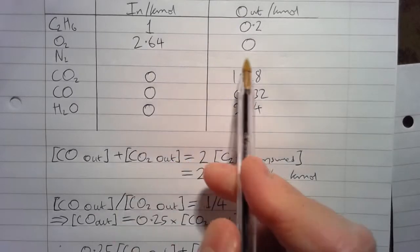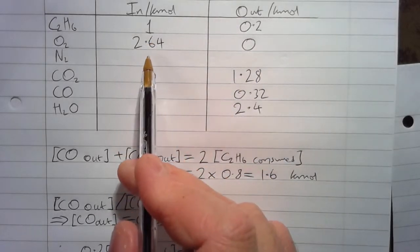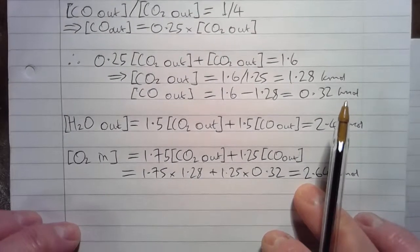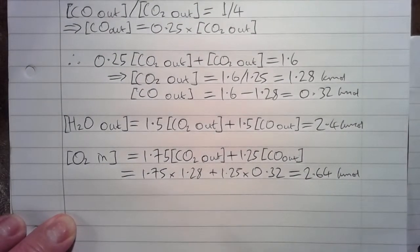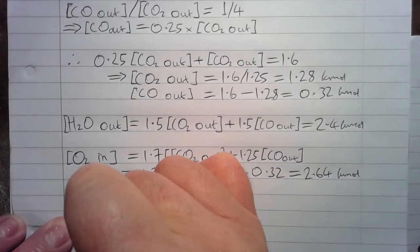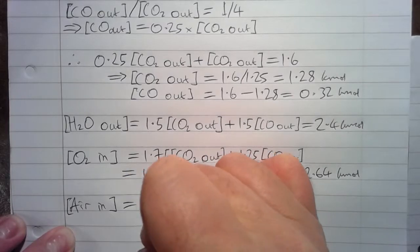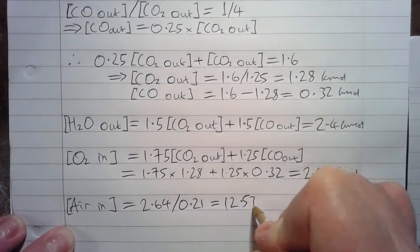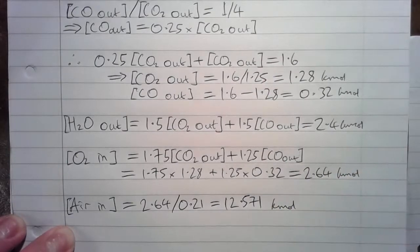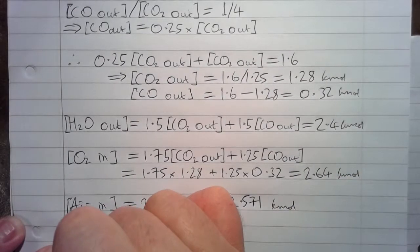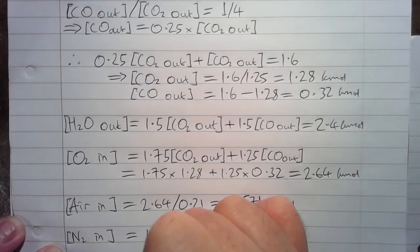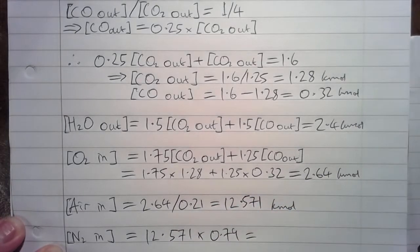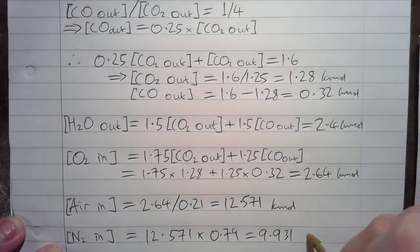So all that we're left with now is the nitrogen, and we can get that from a ratio of the O2. Because it's air that's being mixed with the ethane to actually cause the combustion, we can work out that the air in equals 2.64, the amount of oxygen going in, divided by 0.21. That's 12.571 K moles. And therefore the N2 in must equal 12.571 times 0.79, and that equals 9.931 K moles.